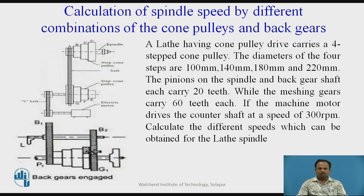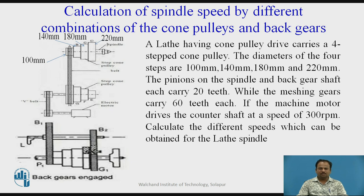Now first of all, we will solve one problem regarding the spindle speed — calculation of spindle speed by different combinations of cone pulleys and back gears. In this particular figure, the two speed cone pulleys are shown connected to the motor. The problem: a lathe heavy cone pulleys carries four step cone pulleys. The diameters of the four steps are 100 mm, 140 mm, 180 mm, and 220 mm. The pinions on the spindle and back gear shaft each carry 20 teeth, while the machine gears carry 60 teeth each.